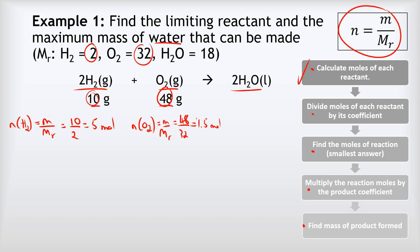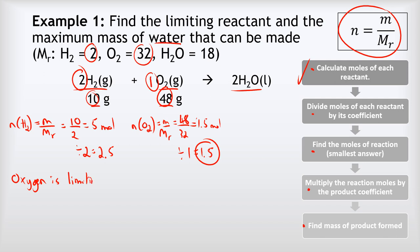Next, divide the moles of each reactant by its coefficient. For hydrogen, the coefficient is two, so 5 divided by 2 equals 2.5. For oxygen, the coefficient is one, so 1.5 divided by 1 equals 1.5. The smaller of these two is 1.5, so oxygen is the limiting reactant — there's only enough oxygen to do 1.5 moles of the reaction, whereas we have enough hydrogen for 2.5 moles.